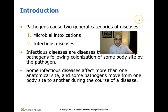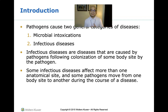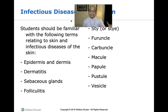When we say infectious diseases, these are diseases caused by pathogens following colonization of some body site by the pathogen. The first step is colonization — these pathogens invade our body. Some infectious diseases affect more than one anatomical site, and some pathogens move from one body site to another during the course of a disease. That is why we talk about an infection being local versus systemic.